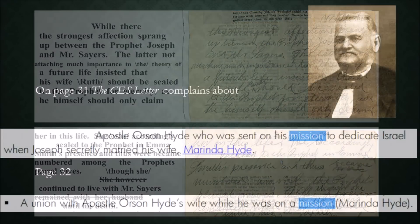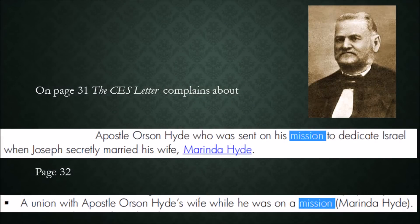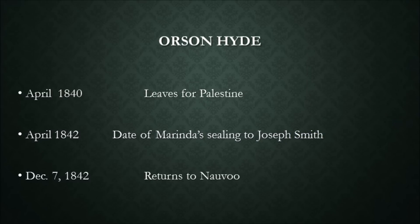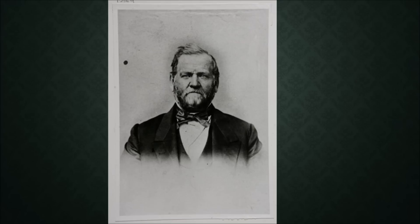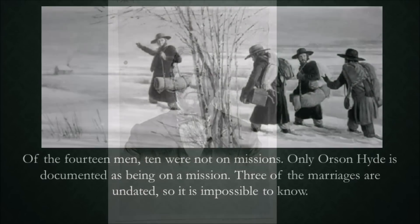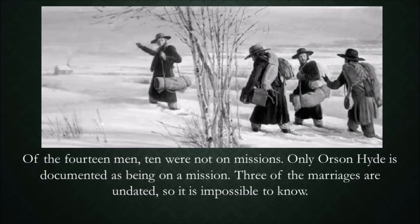On page 31, the CES Letter complains about Apostle Orson Hyde, who was sent on his mission to dedicate Israel when Joseph secretly married his wife Mirinda Hyde. The chronology shows that Orson left for Palestine in April 1840. An entry in Joseph's journal in the handwriting of Thomas Bullock states, 'April 42, Mirinda Johnson to Joseph Smith.' However, the author of the CES Letter does not inform his readers that a second date was attested to by Mirinda herself — that is, May of 1843, months after Orson's return. Usually affidavits signed and notarized are considered reliable. Orson Hyde remained true to Joseph and the church throughout his remaining life. Of the 14 men, 10 were not on missions; only Orson Hyde is documented as being on a mission. Three of the marriages are undated, so it is impossible to know in their cases.